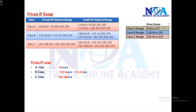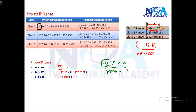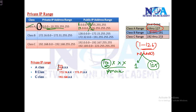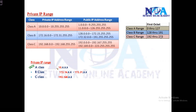In Class A, the range is from 1 to 126 — 0 and 127 cannot be used — so there are 126 networks total. Out of these 126 networks, there is only one private network, which is the 10.x.x.x network. Any address starting with 10 is a private address. The remaining 125 networks (1 to 9 and 11 to 126) are all public. Just remember: only addresses starting with 10 are private; all others in Class A are public.